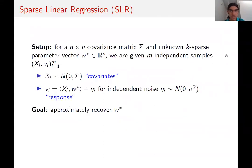Let me introduce the sparse linear regression model. Sparse linear regression is a fundamental problem in high-dimensional statistics that's been widely studied for the last two decades or so. We consider the Gaussian random design setup: there's an n-by-n covariance matrix sigma, an unknown k-sparse vector w-star in n dimensions, where k is much smaller than n. We're given m independent samples (x_i, y_i), where each x_i is drawn from the normal distribution with covariance sigma, and each y_i is the inner product of x_i with w-star plus independent noise. The goal is to approximately recover w-star from as few samples as possible.